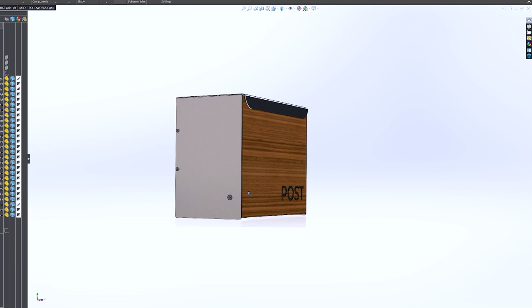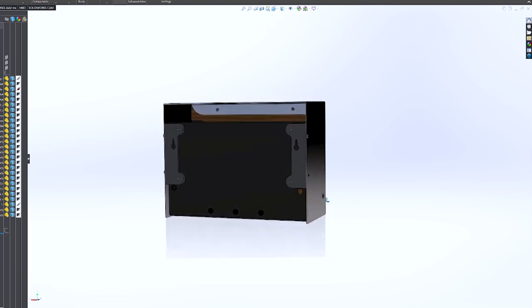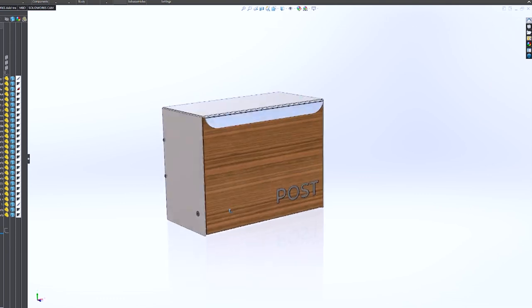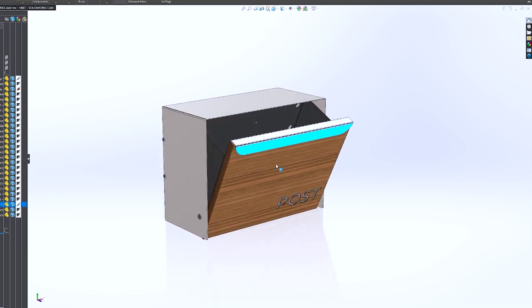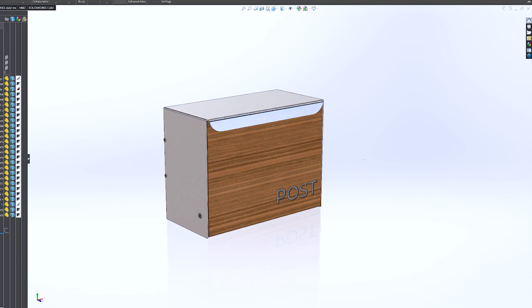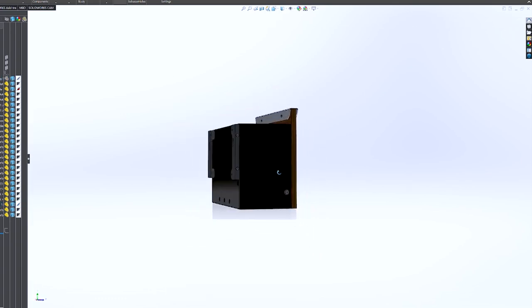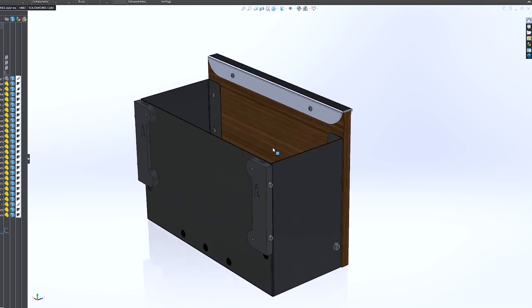Now we can take a look at the 3D model of what we're after. The mailbox consists of a few major parts: a wooden panel on the front, a stainless steel outer shell, a regular steel inner shell, some hardware, a handle, and some 3D printed parts at the back.